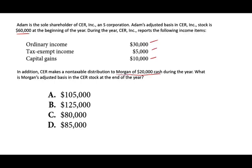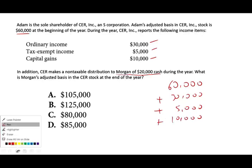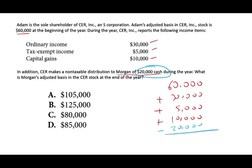Your beginning basis plus all the changes equals your ending basis. Beginning basis is $60,000, and all income will increase your basis — the $30,000 increases your basis, the $5,000 increases your basis, the $10,000 increases your basis. But you also have to remember that a cash distribution reduces your basis. You had a cash distribution of $20,000. Taking everything into account, your basis will be $85,000. The answer is $85,000.